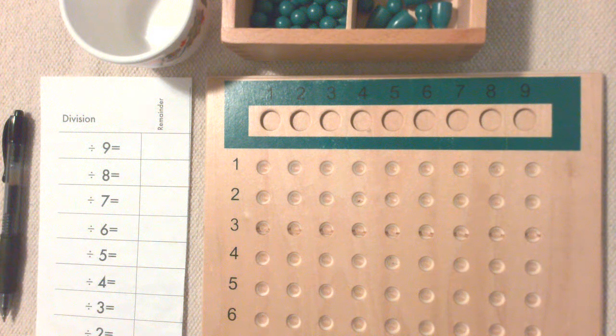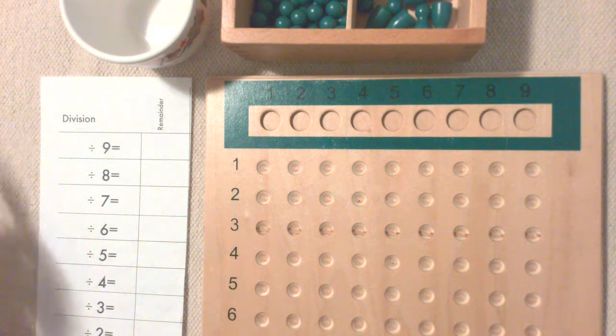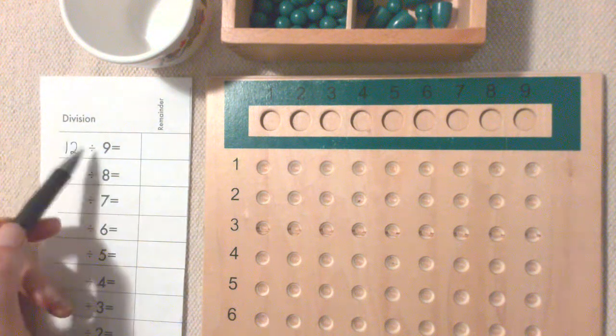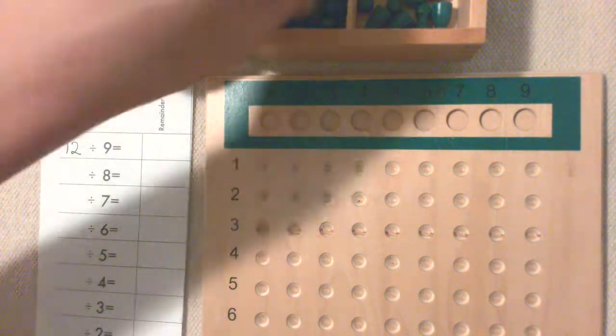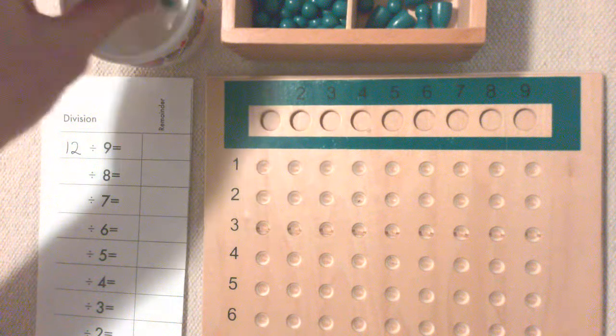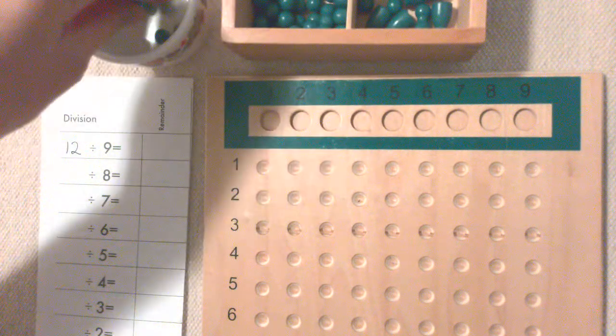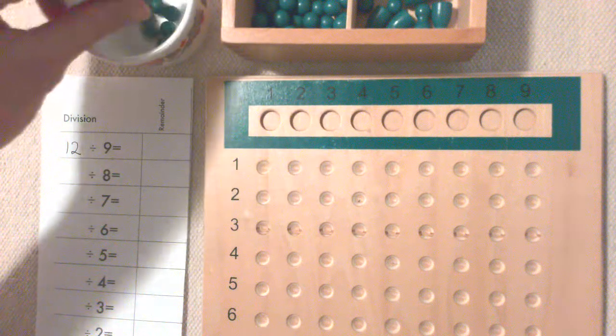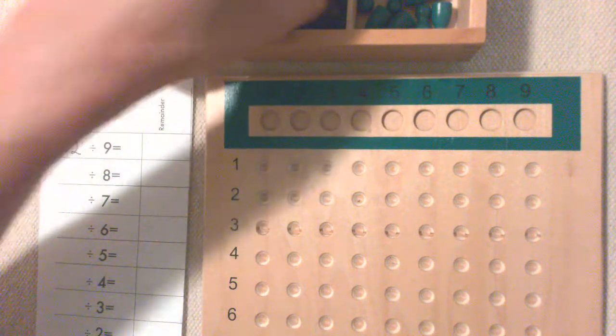This is the division board to learn the division tables and we're going to start with 12 divided by 9. 1, 2, 3, 4, 5, 6, 7, 8, 9, 10, 11, 12.